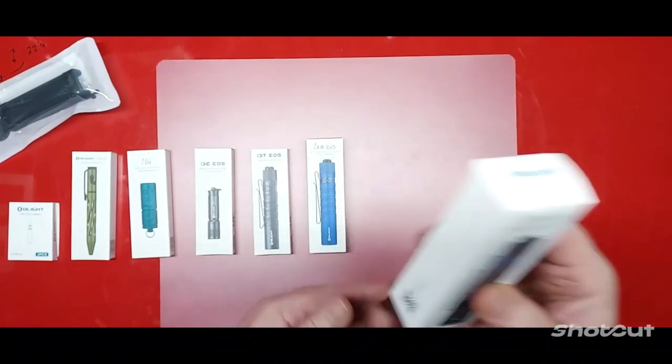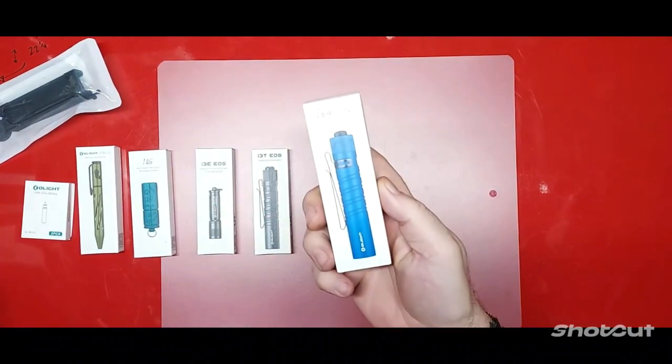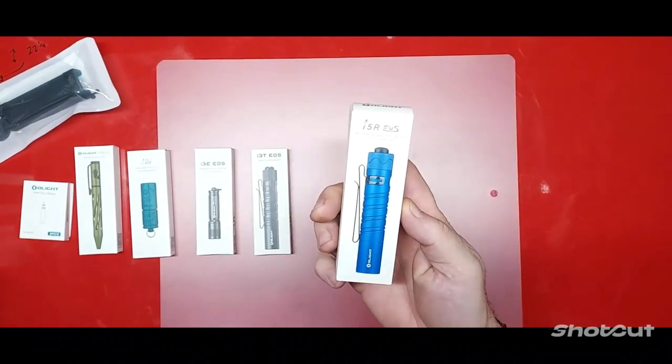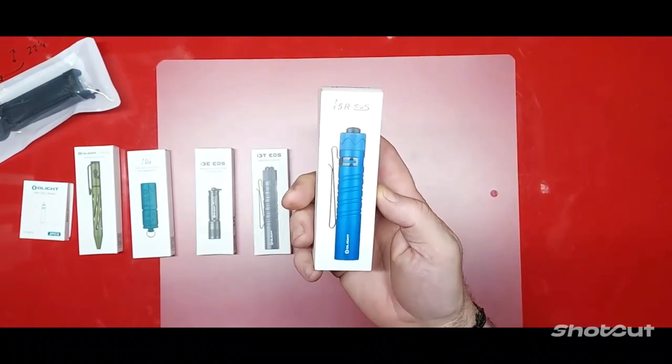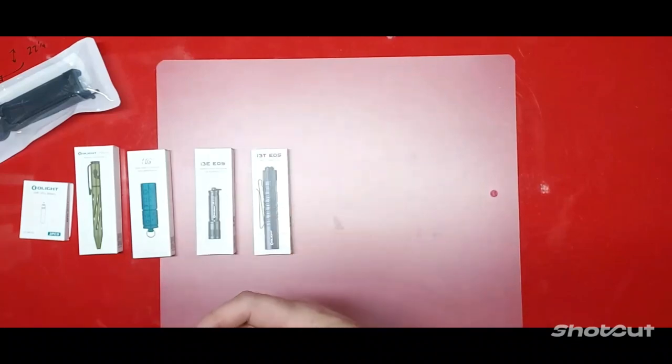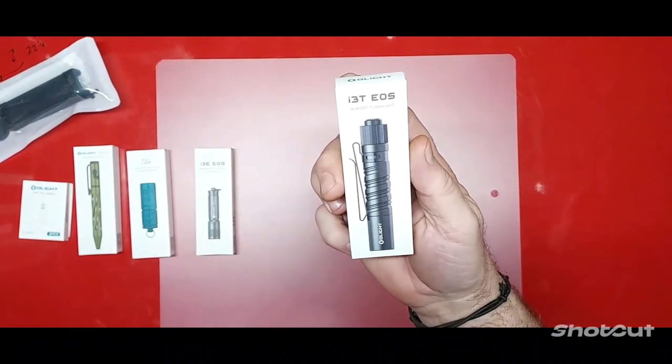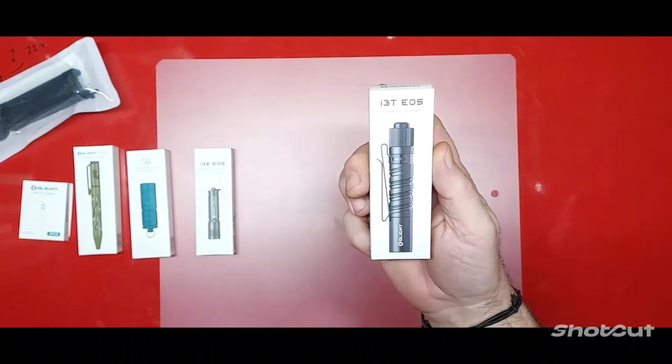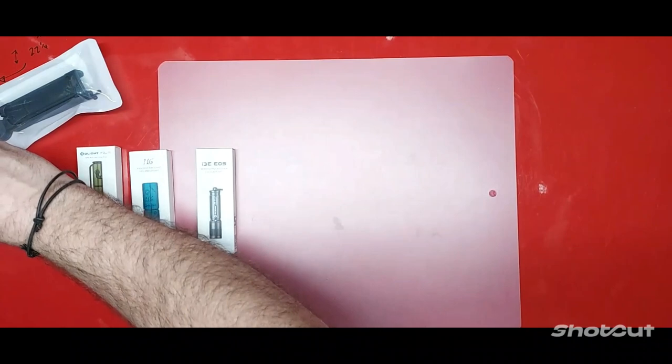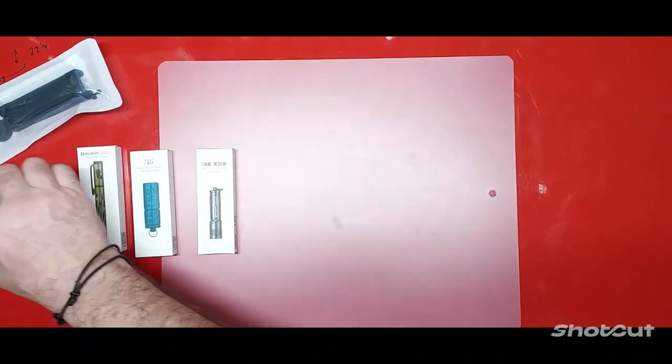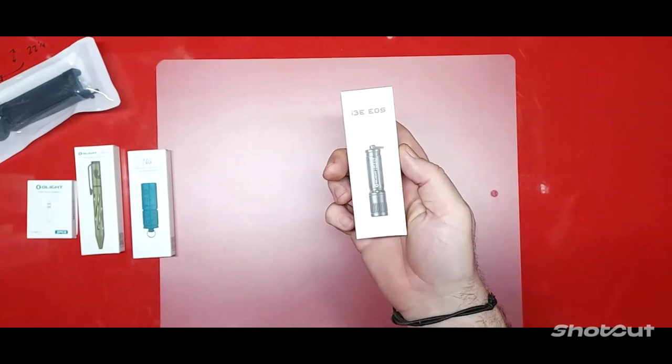These are awesome. This is another version of the same light. It actually came in, I believe this was in one of the gift sets. I'm gonna have to look this up and I'll try to put the links in the description. It's the i3T EOS, another EDC flashlight. I've been dying to check out, so yeah, I really can't wait to check some of these out.